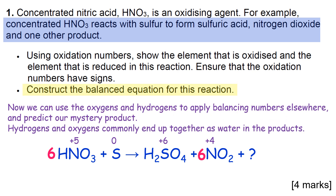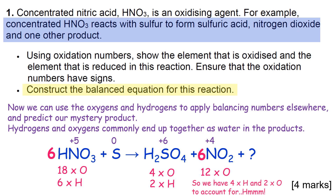Now let's clear some space and think about balancing the equation using species as well. We can use the oxygens and hydrogens to apply balancing numbers elsewhere in the equation and predict what our mystery product might be. As you've probably guessed, hydrogen and oxygen commonly go together as water, so let's count up the number of atoms of each. We have four hydrogens and two oxygens to account for.